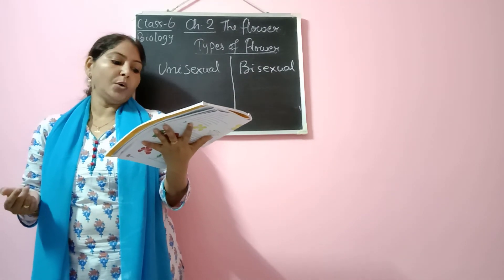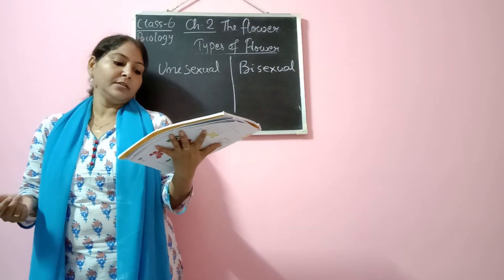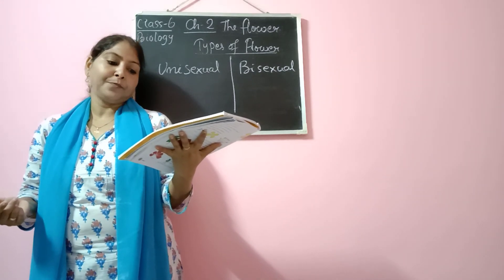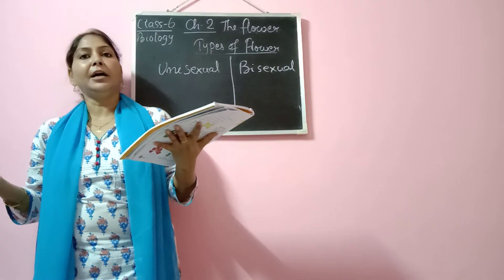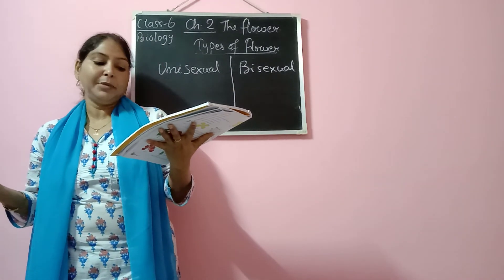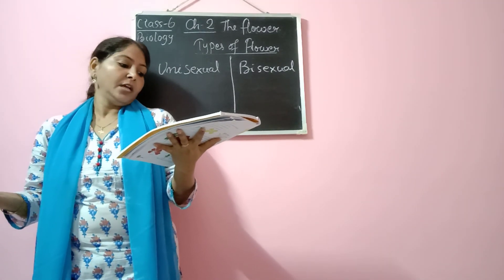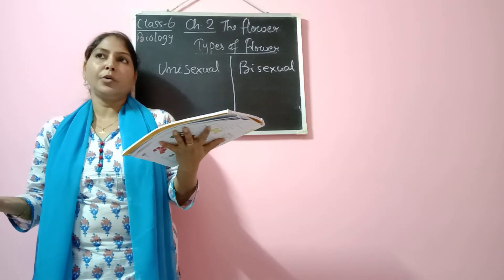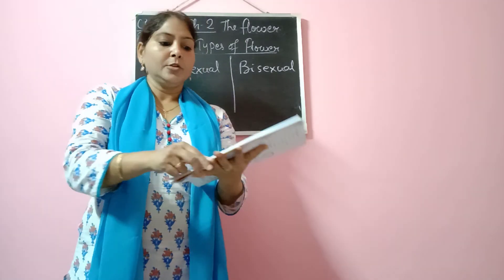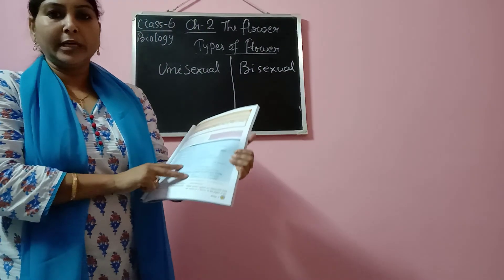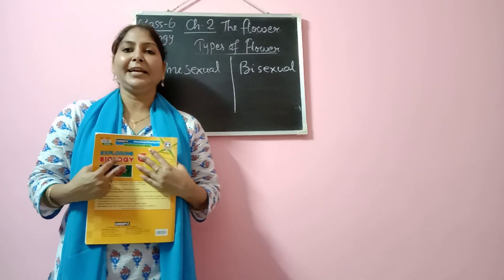Question B: circle the odd one and name the category to which the other three belong. China rose, mustard, tea, date palm — date palm is the odd one out. The rest are complete flowers, and date palm is an incomplete flower. Question 2: rose, lily, gulmohar, cucumber — find out the answer by yourself, everything I have told you. You will do this in your book and send me your work for correction. Keep studying and take care. Bye-bye.